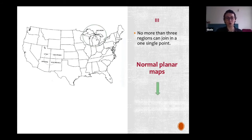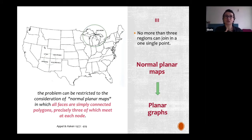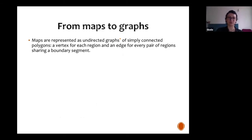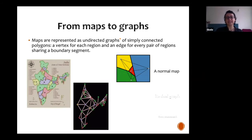Normal planar maps can be translated into graphs. We consider each region as having a sort of capital, and then we draw edges between them, giving us a graph. Because we are talking about normal planar maps, we are talking about normal graphs too — they are all directly connected. These conditions translate into the graph theory formulation. Maps are represented as undirected graphs, because there's no direction needed for the vertices. Here we have the map of India transformed into a graph.